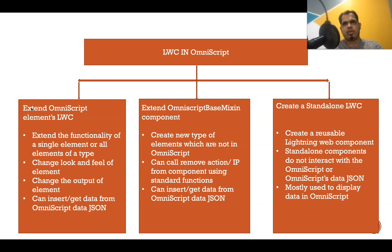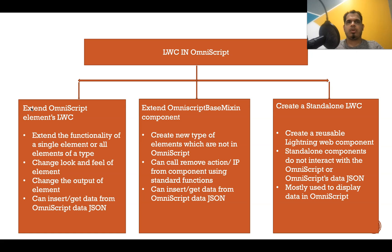Generally we use the standalone LWC component when we need to display some data. For example, let's say we want to get all the contacts of an account and just display them on the screen. We can create a standalone LWC component, pass the account ID to it, query all the contacts of that account, display them in a table on the LWC component, and then drop that LWC component onto the OmniScript.